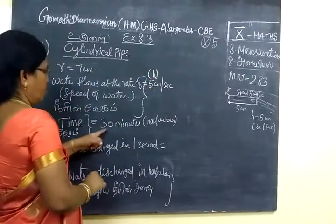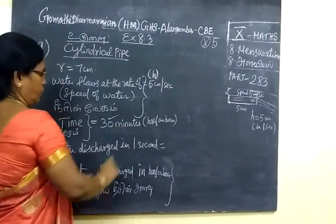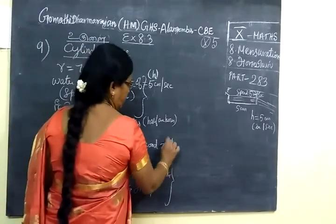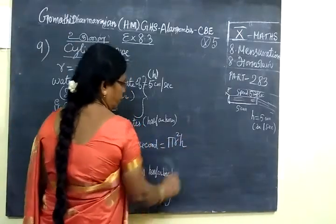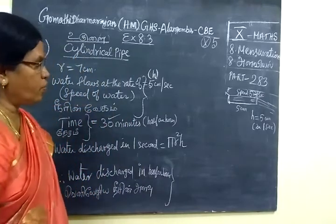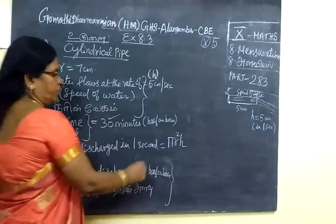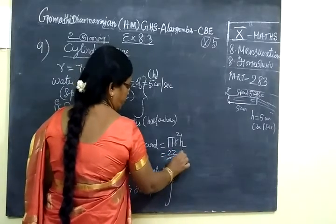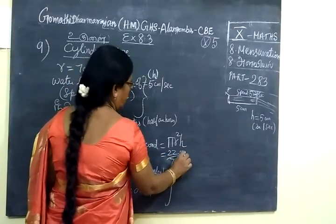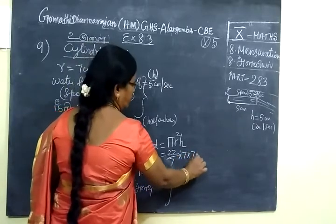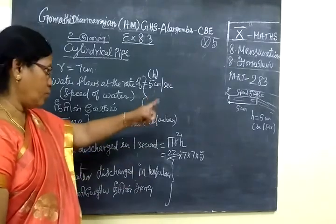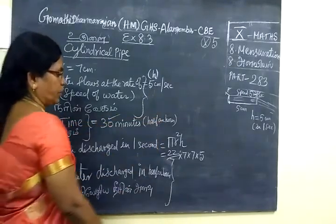Time is also given. For one second, water discharge - so volume of cylinder equal to π r² h. So 22 by 7 into 7 into 7 into 5.